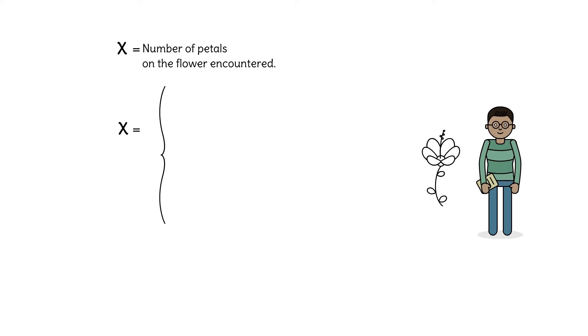Now, we could list these out in order. A flower with 0 petals gets a score of 0, 1 petal gets a score of 1, and so on. The fact that we could list these out in order means that this is a discrete random variable. Remember, discrete means countable.